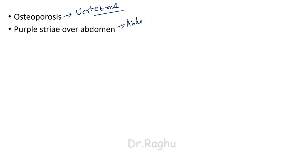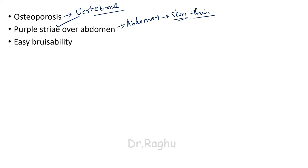There is also going to be purple striae over the abdomen. This occurs because the abdomen stretches due to protuberance and abnormal fat deposition, making the overlying skin very thin. The underlying subdermal tissue breaks up due to lack of protein and collagen synthesis, producing purple striae. There is also easy bruisability because capillaries contain collagen in their walls; cortisol inhibits collagen synthesis, making capillaries fragile. Minor injuries that normally wouldn't cause bleeding now result in bleeding under the skin.